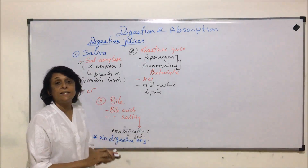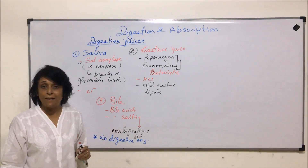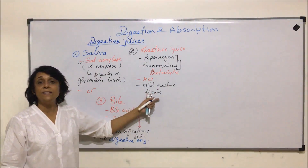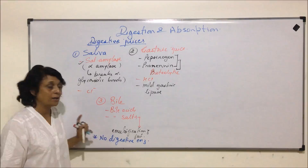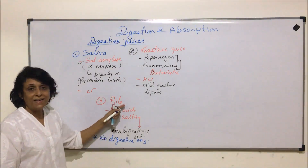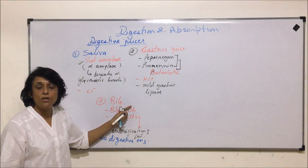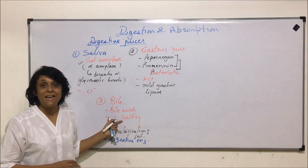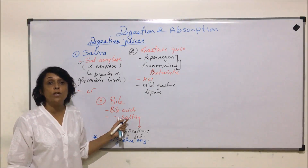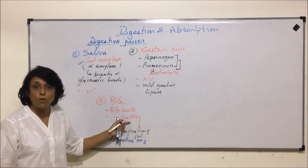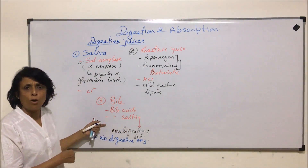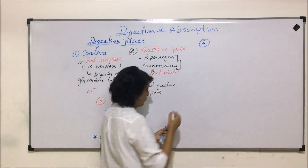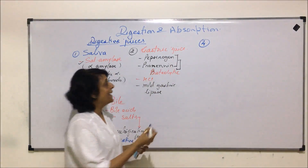Bile is still essential for digestion because unless fat is emulsified, lipases will not be able to act on fat molecules. The bile acids include colic acid, deoxycholic acid, and chenodeoxycholic acid. The bile salts include sodium bicarbonate, sodium glycocholate, and sodium taurocholate. There are also pigments present in bile.